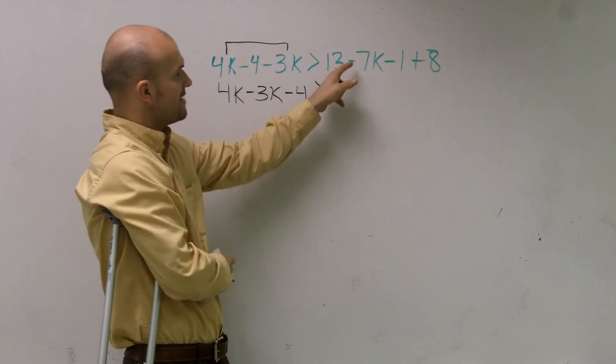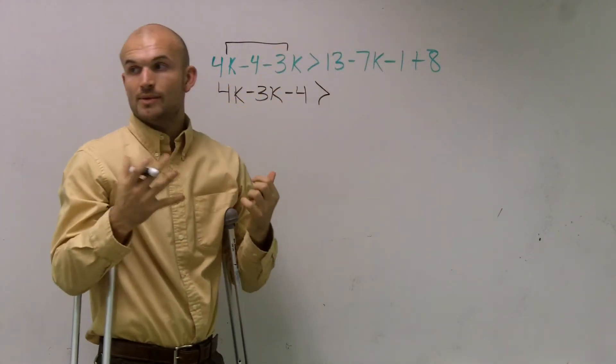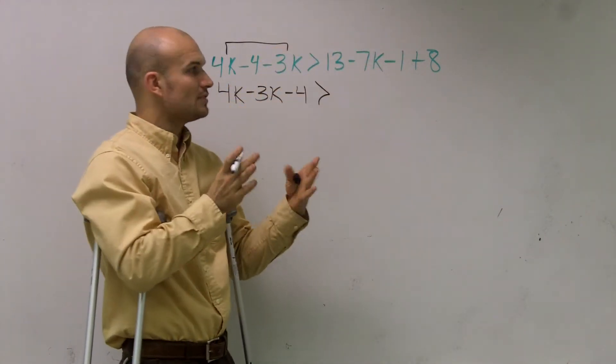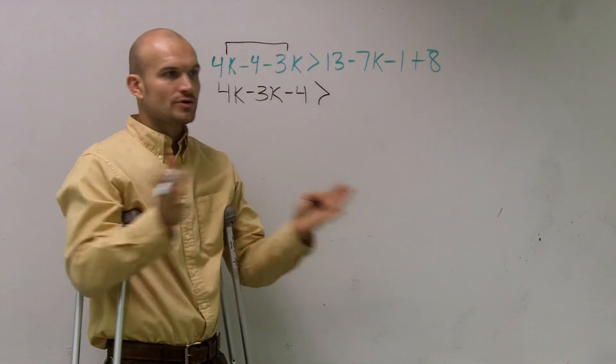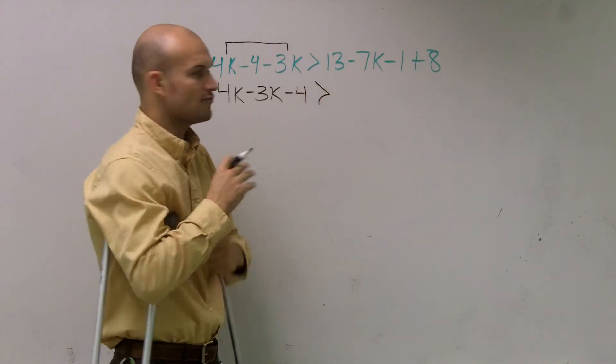Over here, I see I have a negative 7k, but then I have a 13, a negative 1, and 8. So it's really important for you to understand that if you have like terms on the same side of an equation, you can just combine them. You don't need to do the minus on both sides and so forth.